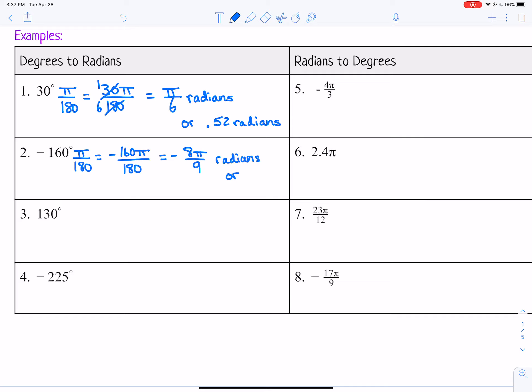Or we could put it into decimal form. That would be negative 2.79, and that's rounded off. So again, only if someone asked you to round it off would you want to do that. Otherwise, leave it in terms of pi.